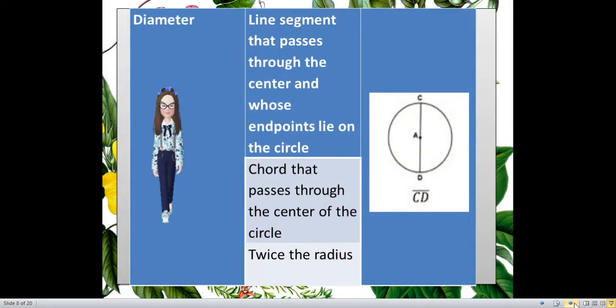Next term is the diameter. Diameter is a line segment that passes through the center and whose endpoints lie on the circle. Take note of the next definition that I'm going to say. Diameter is also a chord that passes through the center of the circle. Another concept, it is twice the radius. And here is the diameter on our illustration. Again, it should pass through the center and the endpoints should lie on the circle. Therefore, your line segment or diameter is diameter CD or line segment CD. It is twice the radius because I can have radius AC and radius AD.